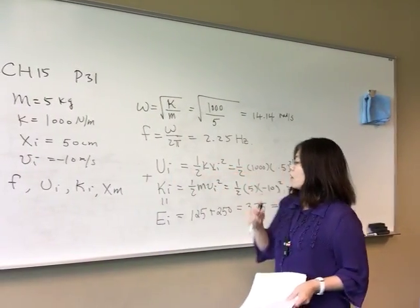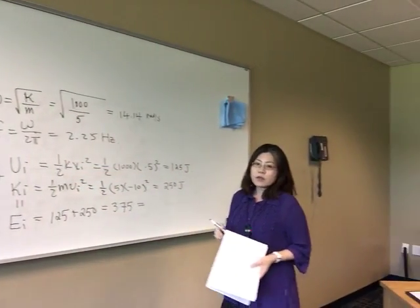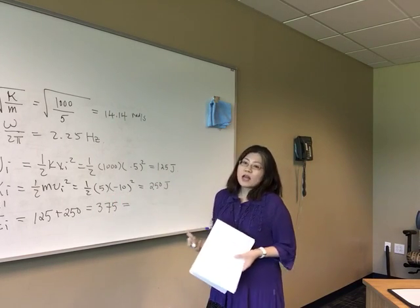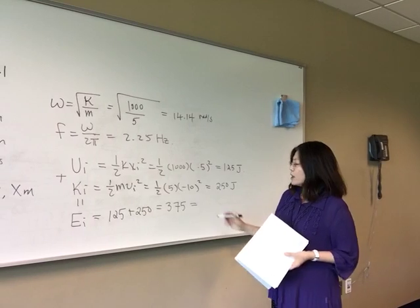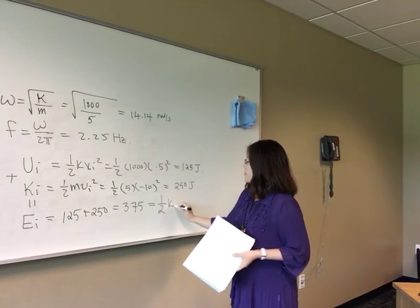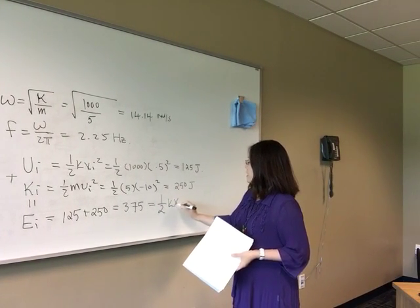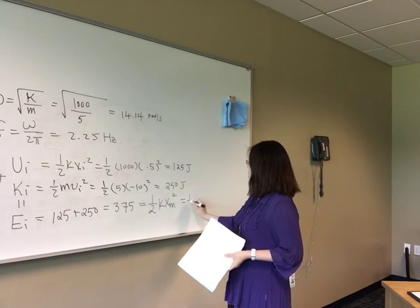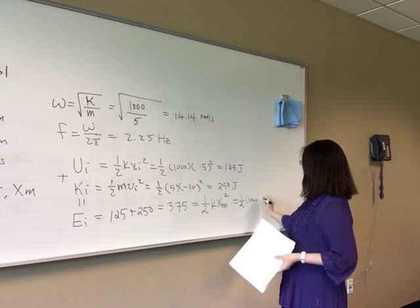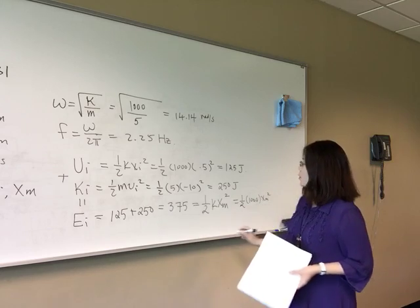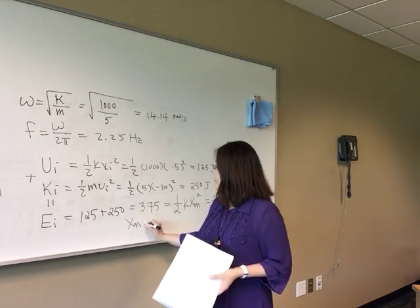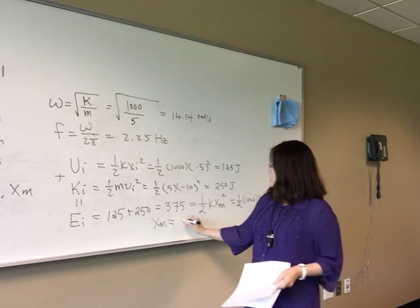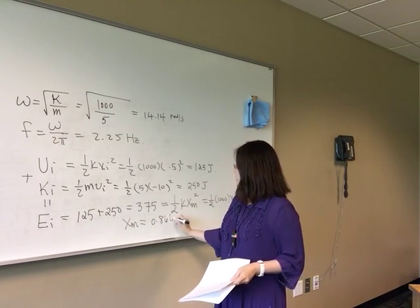Using conservation of energy: when all the energy has converted into spring potential energy, we have 375 equals one-half times k times xm squared. With k equal to 1000, solving for xm gives an amplitude of 0.866 meters.